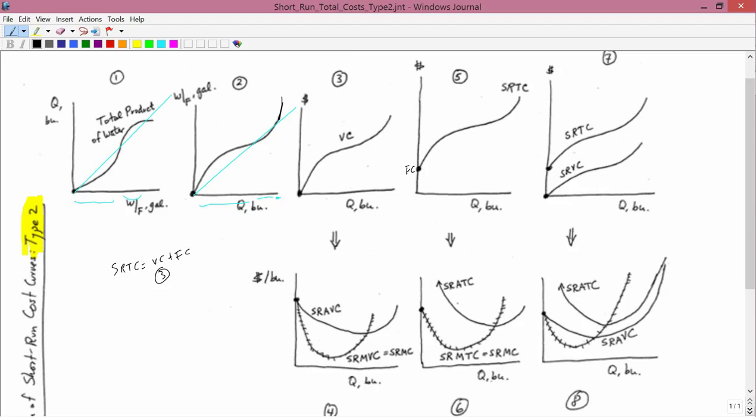Then to get graph number 7, you simply superimpose graph number 3 and graph number 5. Graph number 5 is going to start at fixed cost. Graph number 7 is short-run total cost, and it has the same shape as short-run variable cost. So that's how to get 1, 2, 3, 5, and 7.